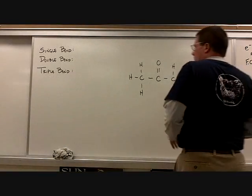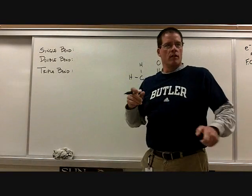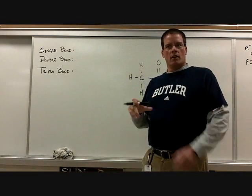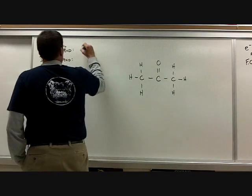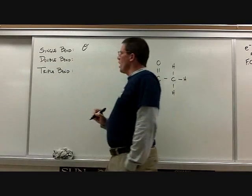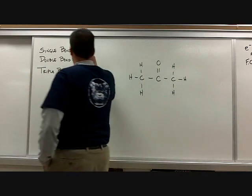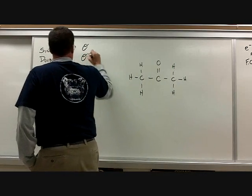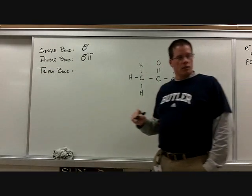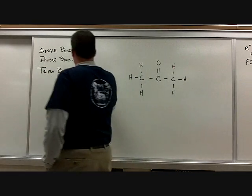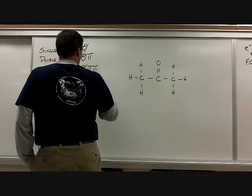Let's review quickly. For a single bond, what type of bond do I have? Sigma. For a double bond? Sigma pi. For a triple bond? Sigma pi pi, or sigma pi squared.